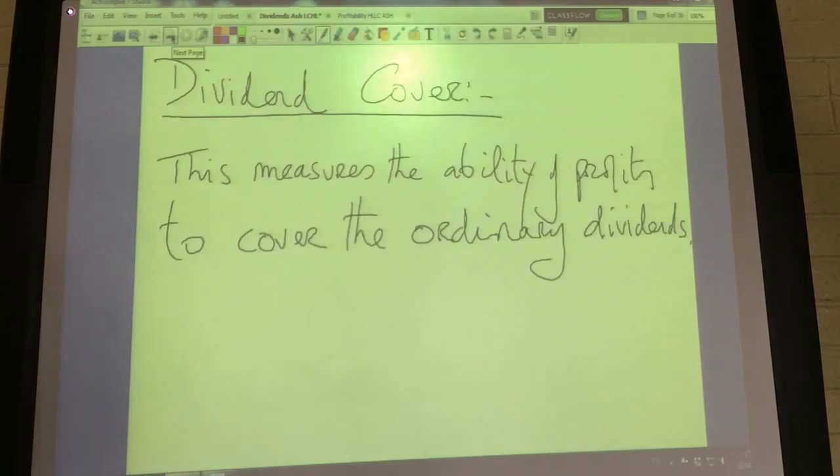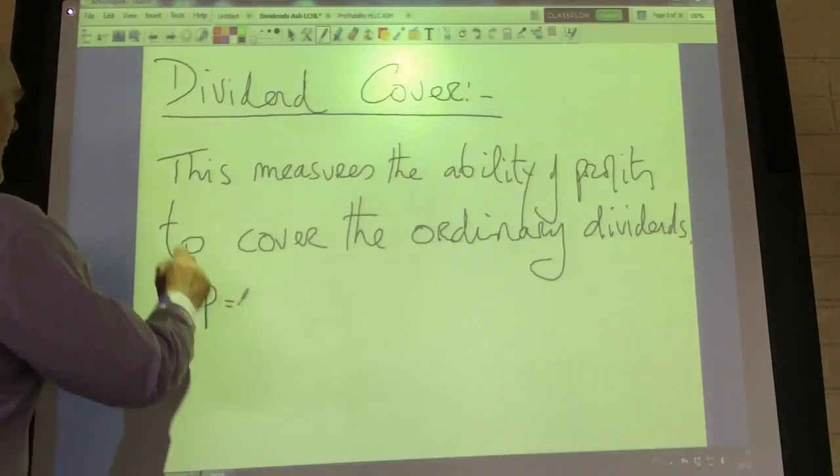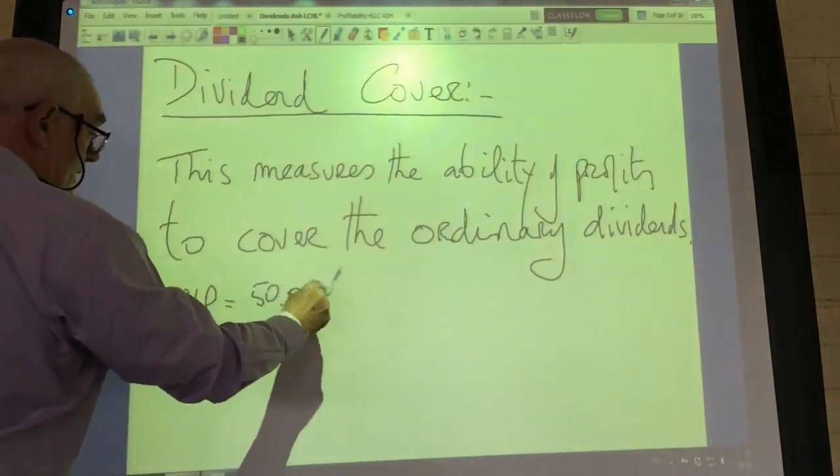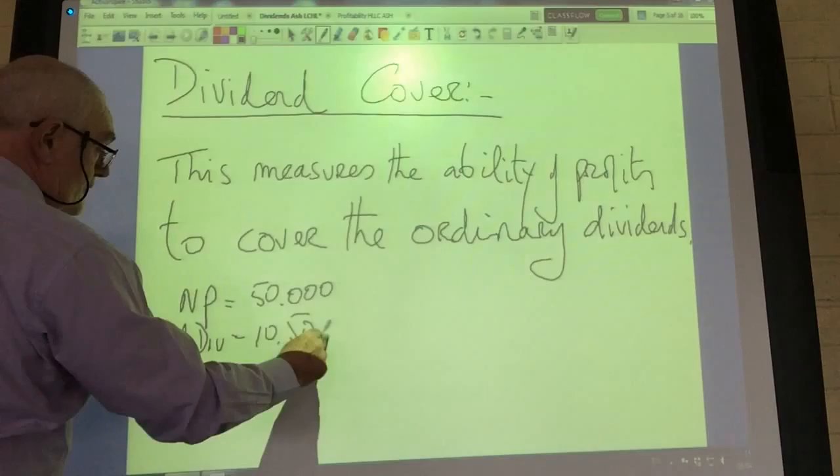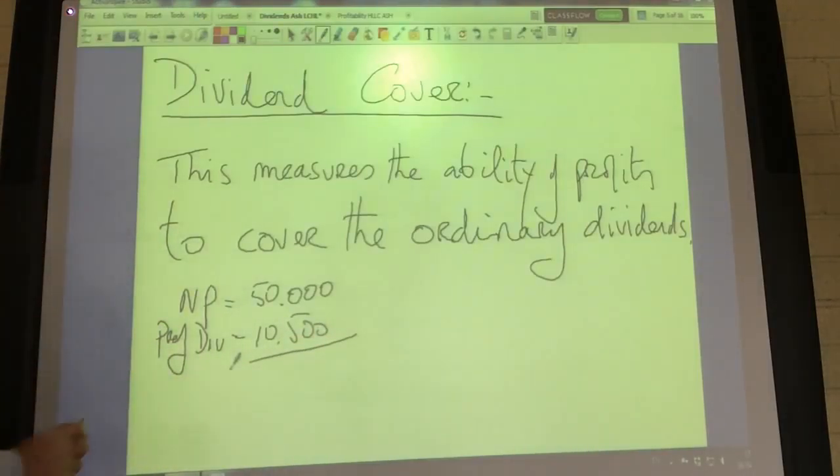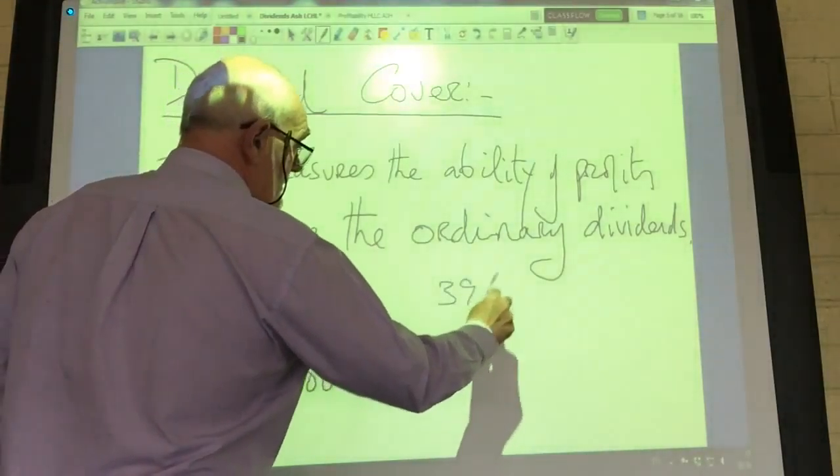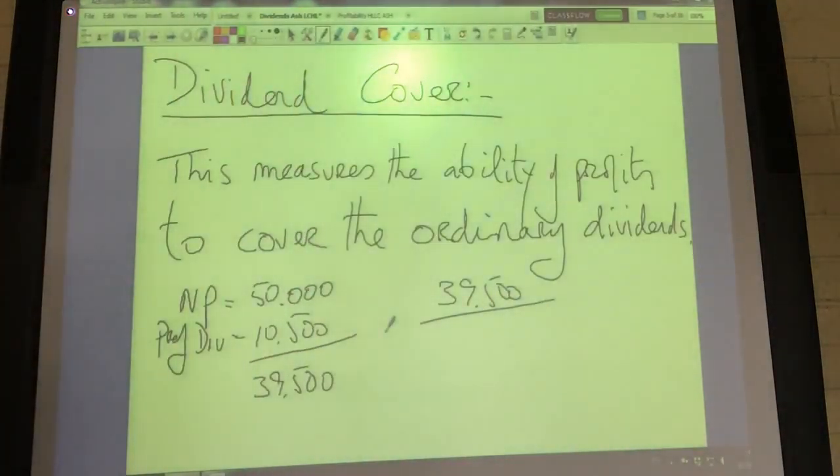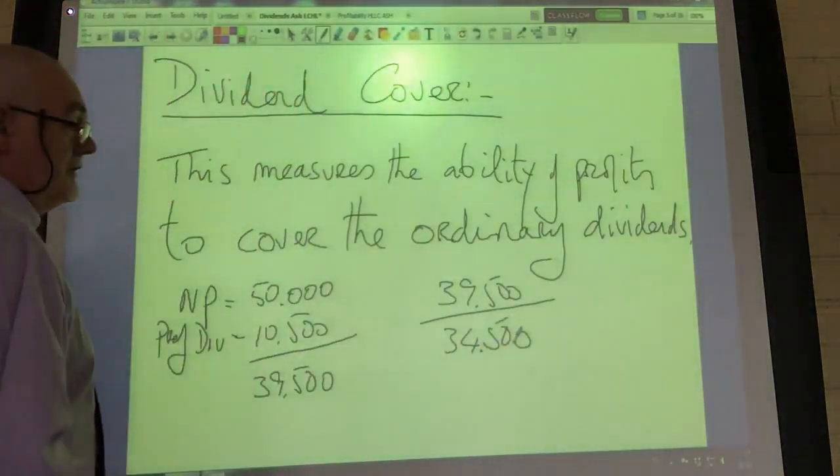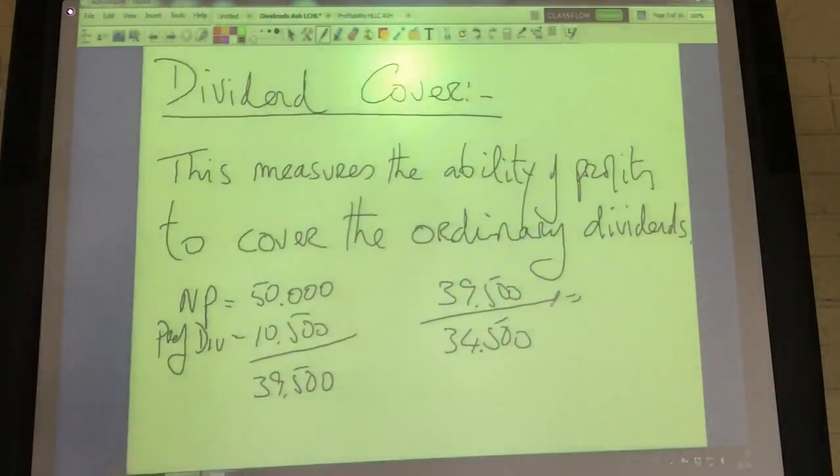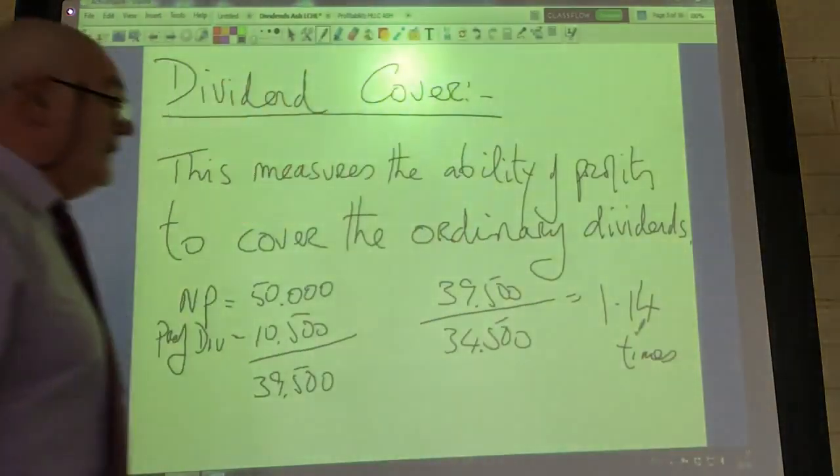For dividend cover, we remember that our net profit was 50,000, but the preference dividend was 10,500, so the net profit attributable to ordinary shareholders was only 39,500. We gave them dividend of 34,500, so that gives us a dividend cover of a very low 1.14 times.